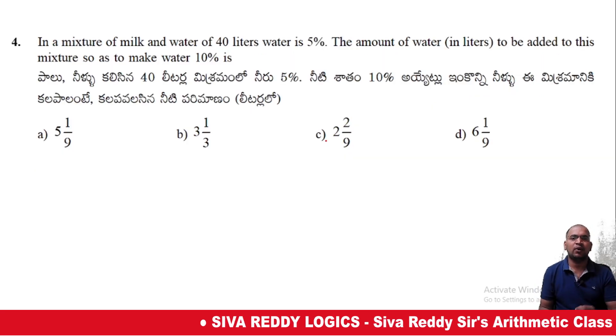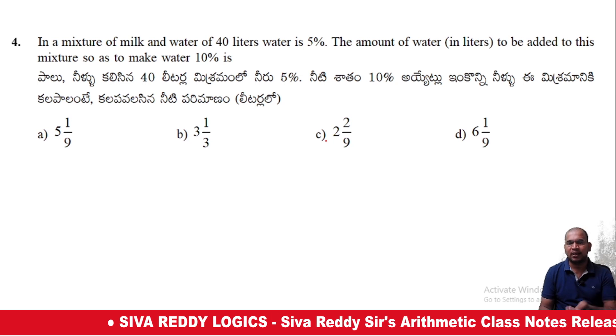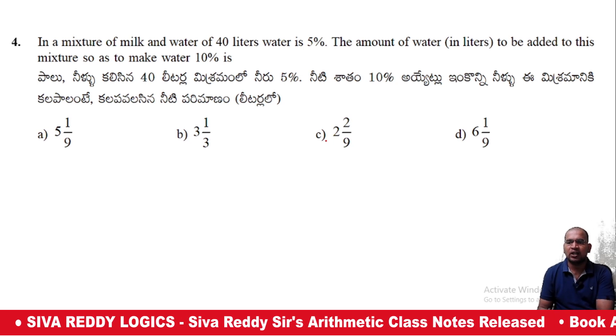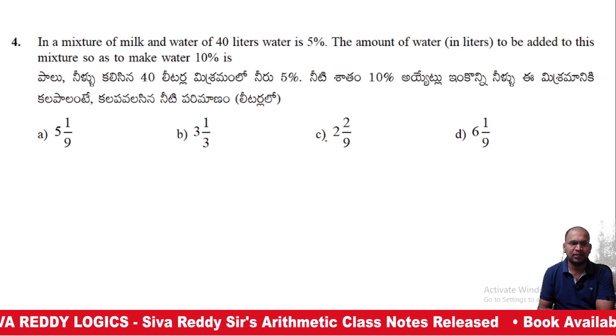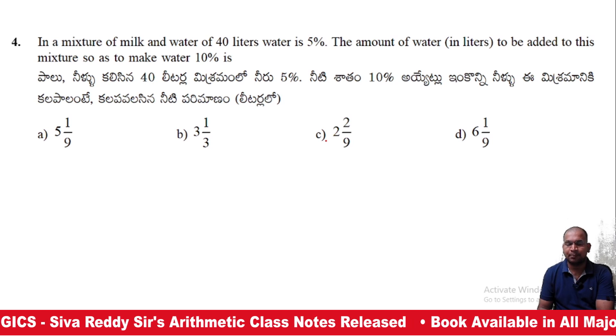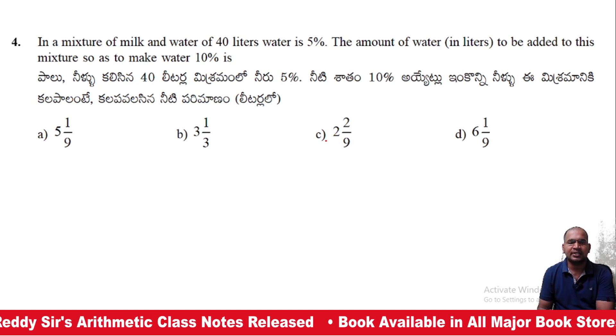This is a mixture of milk and water of 40 liters. Water is 5%. The amount of water to be added to this mixture so as to make 10% water is what?